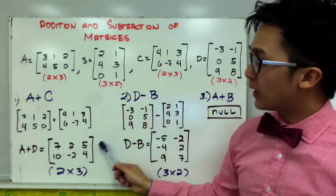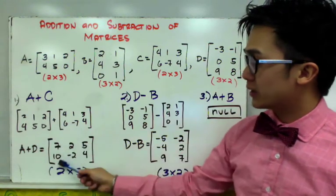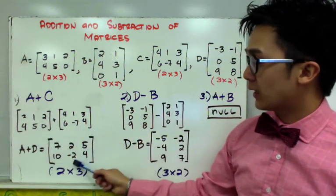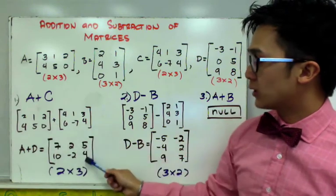And for the second row of our matrix, we'll have 4 plus 6, which is 10, 5 plus negative 7, which is negative 2, 0 plus 4, which is 4.